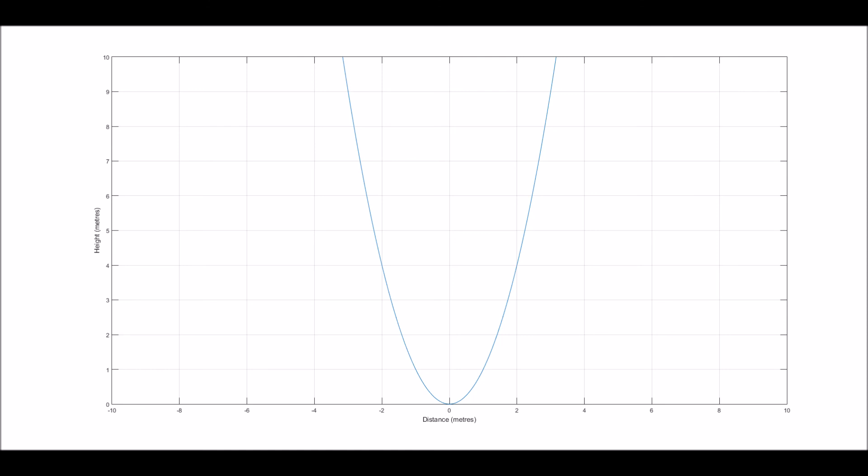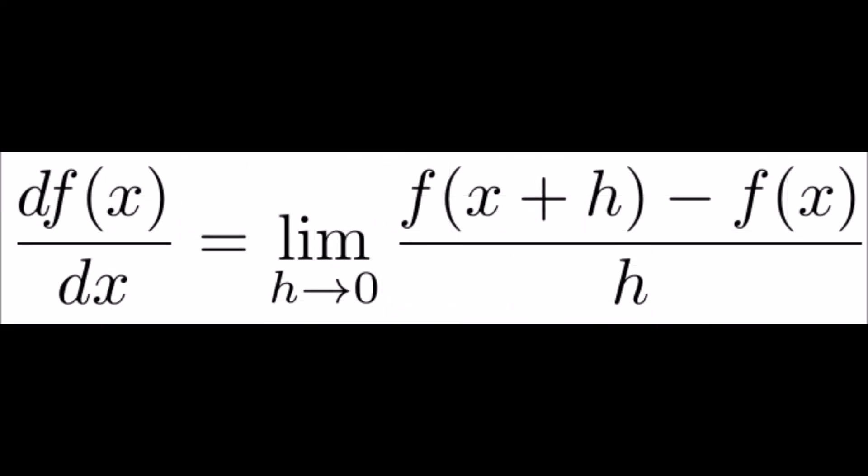So in summary, to find the rate of increase or gradient of any function, simply take two points in the function and find the change in y over the change in x between these two points. Then decrease the distance between the two points, mathematically taking the limit as the distance between the points tends to 0, as shown by this equation, which is the definition of differentiation most commonly used in physics. The d means change just like the triangle symbol delta, however it means change as the limit between the points tends to 0.